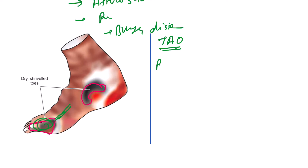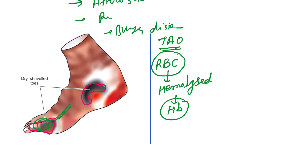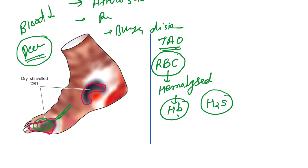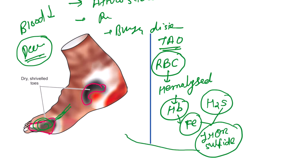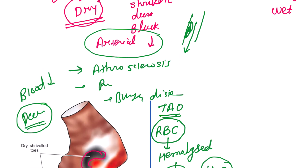The reason it appears black: the RBCs already present in that part become hemolyzed and release hemoglobin. Bacterial growth is very low in dry gangrene because blood supply is minimal, but the small bacteria present release hydrogen sulfide. The iron from hemoglobin combines with this sulfide to form iron sulfide, which is blackish in color. Iron sulfide absorbs all the light and appears black.